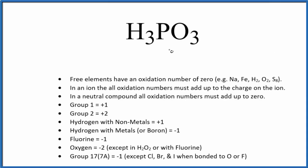Let's find the oxidation number for each element here in H3PO3. This is phosphorous acid. So when we look at H3PO3, there's no negative or positive. So this is a neutral compound. All the oxidation numbers, they're going to add up to zero. So that's very helpful.